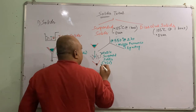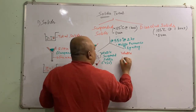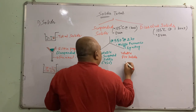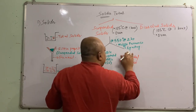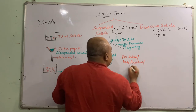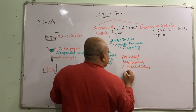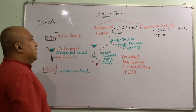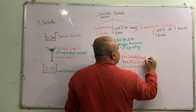Whatever is left behind after ignition is called Fixed Suspended Solids, also referred to as Fixed Solids or inert solids — it cannot be broken down. Similarly, for the dissolved side, if you heat the water that contains salt or sugar, the salt which was dissolved will remain at the bottom. That residue is called Total Dissolved Solids.